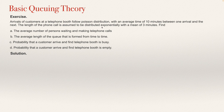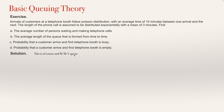When the time of arrival of the customer is exponentially distributed and the time when the customer uses the server is also exponentially distributed, then we can say that this is an M/M/1 queue. This refers to only one server, so we have only one telephone booth.